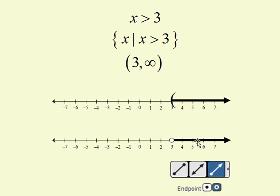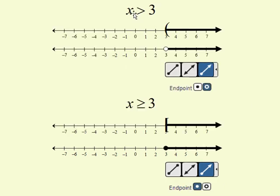To graph this particular ray, we would first choose the ray option, and then we would choose an open circle for the endpoint. Notice that the only difference between the inequality x is greater than 3, and the inequality x is greater than or equal to 3 when we graph, is a parentheses versus a bracket, and an open circle endpoint versus a closed circle endpoint. To graph both of these, we start with the ray option, and then choose the appropriate endpoint. Let's see this in action.